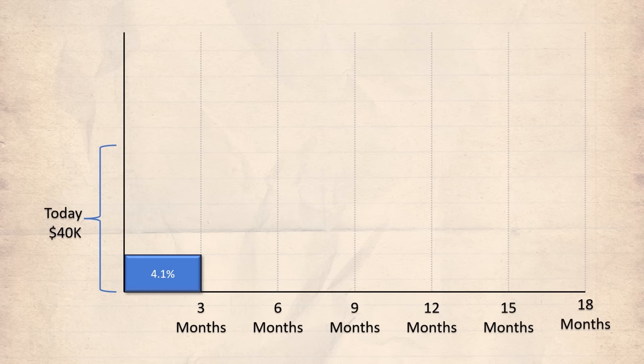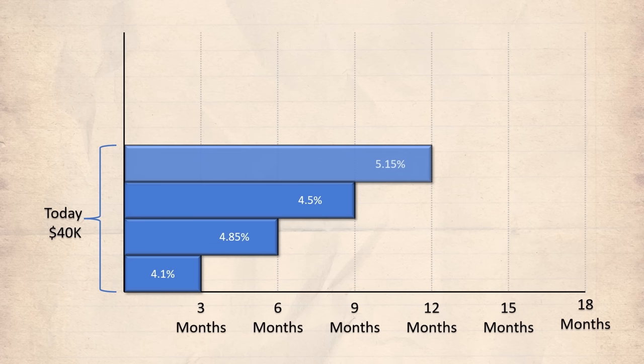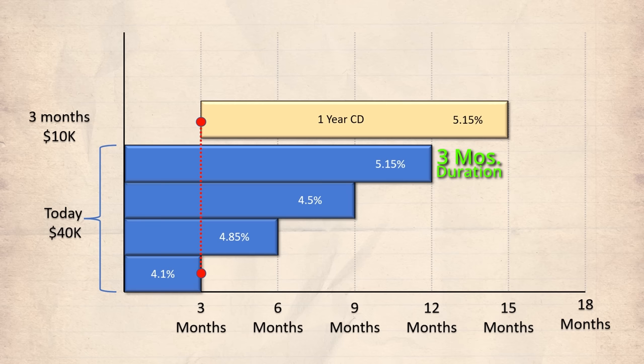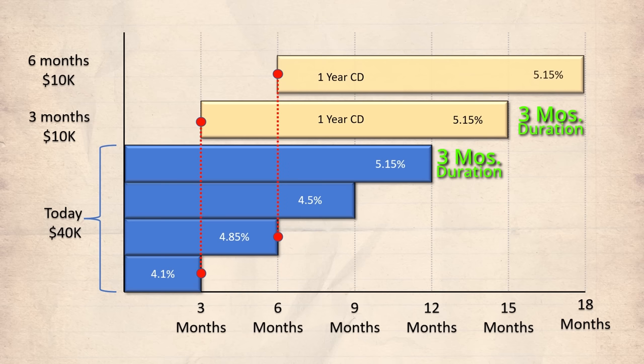Now let's illustrate the functionality of a ladder using CDs as an example. Let's say you have $40,000 that you want to invest in a CD ladder, where you plan to buy four different CDs today at $10,000 each — one with maturity in three months, six months, nine months, and a year. This way you'll have a CD that matures every three months, where you can then choose to either cash it out or buy another CD with a one-year maturity. Buying a one-year CD ensures it will mature three months after your original one-year CD, keeping the maturity cadence going every three months.